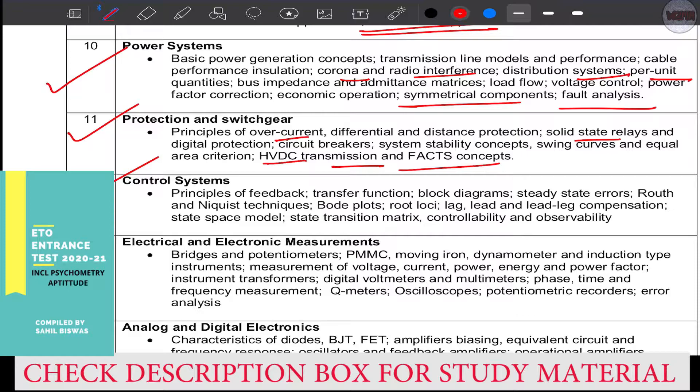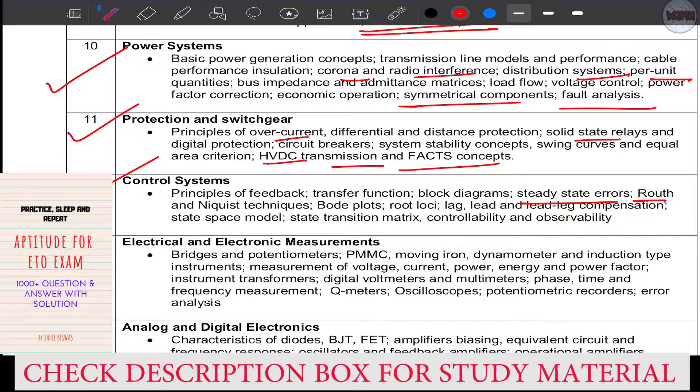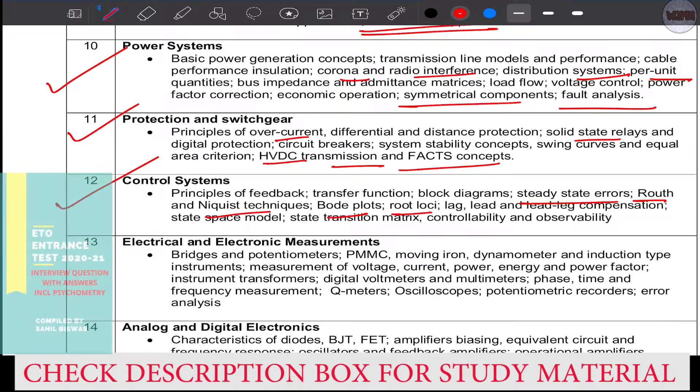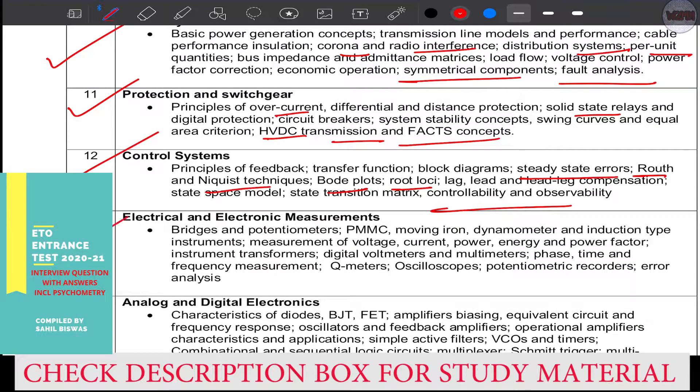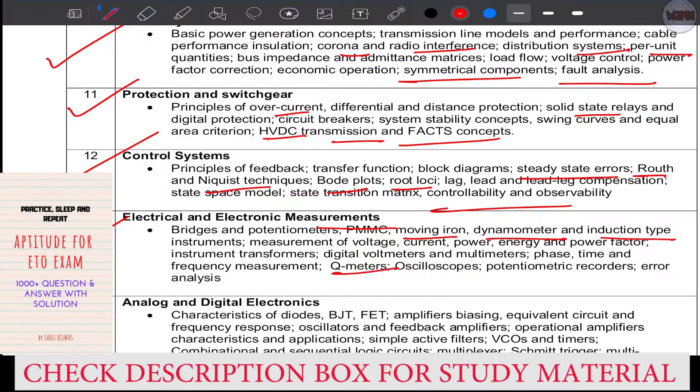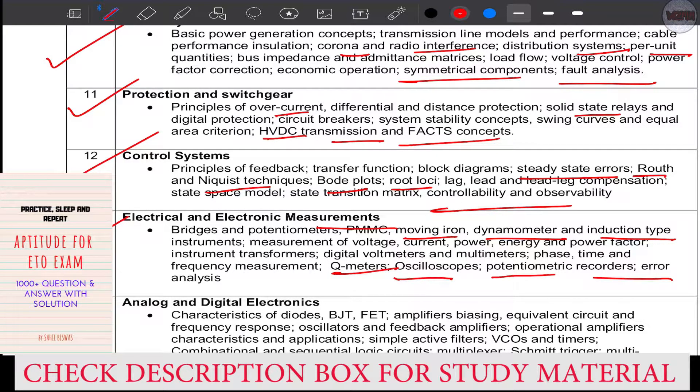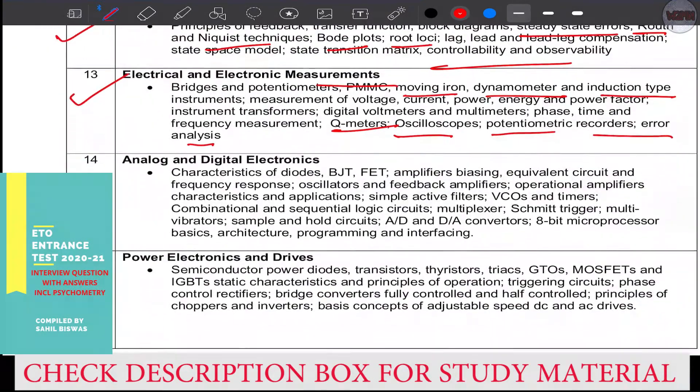Twelfth: control systems - principle of feedback, transfer function, block diagram, steady state errors, root locus techniques, Bode plots, root locus. In thirteen there will be electrical and electronics measurement: moving iron, dynamometer, Q meter, oscilloscopes, potentiometers, recorders, error analysis.